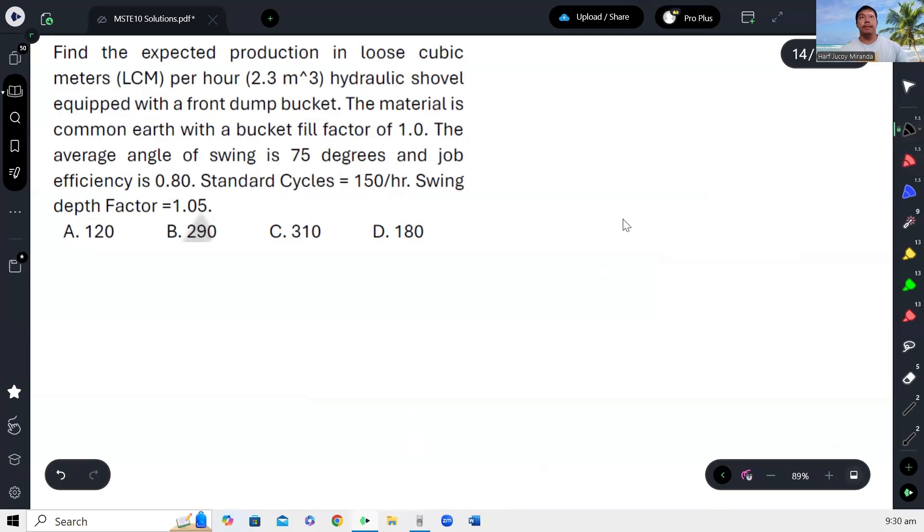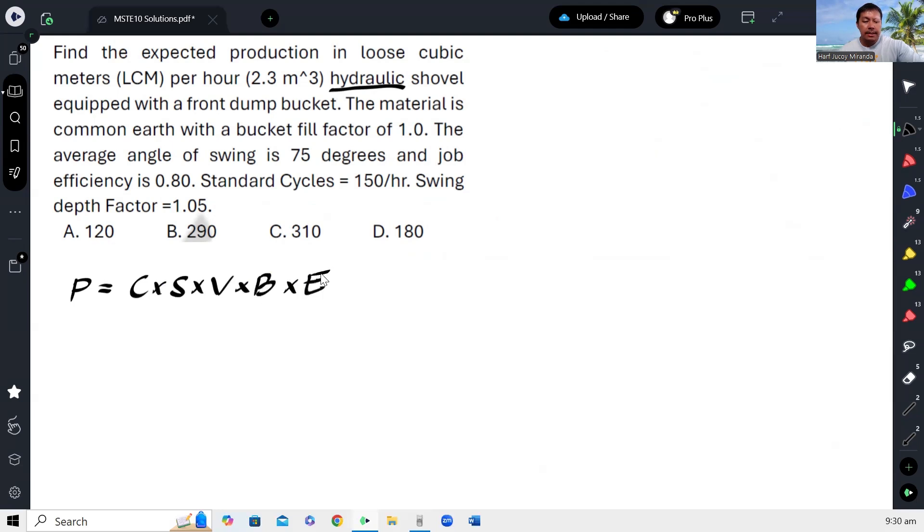So for the formula of hydraulic excavator, please refer to the previous video of this series. But I'll just go directly. First of all, this is hydraulic, so our production can be equal to C times S times V times B times E.